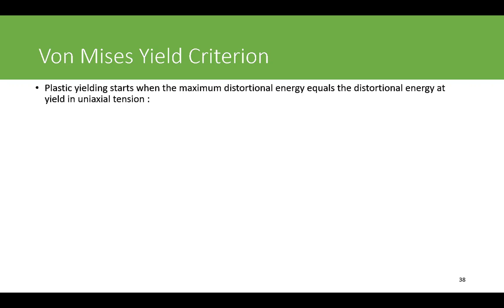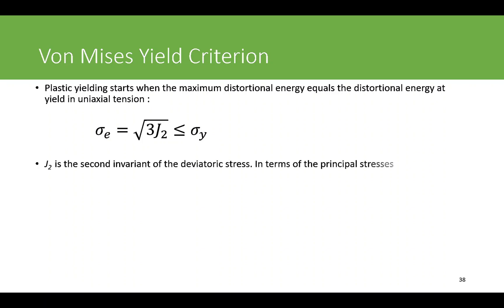If you talk about plastic yielding, different theories are available and the most widely accepted is the maximum distortional energy theory. It says that when the maximum distortional energy equals the distortional energy at yield in the uniaxial test, the material will have plastic yielding. Based on this energy definition, we end up with a criterion which says that when the equivalent stress — given by the square root of three times J2 — is less than or equal to sigma_y.